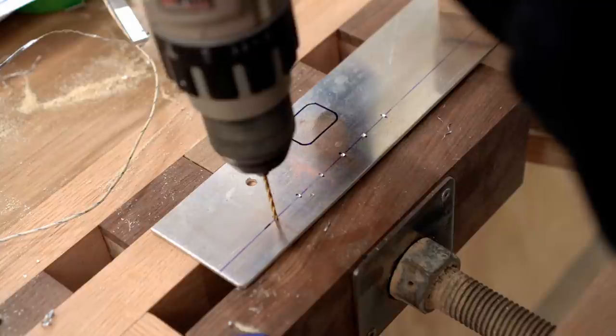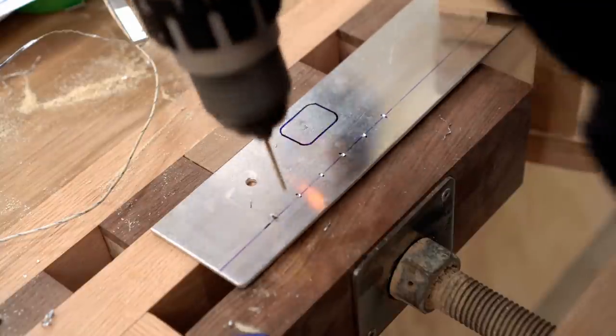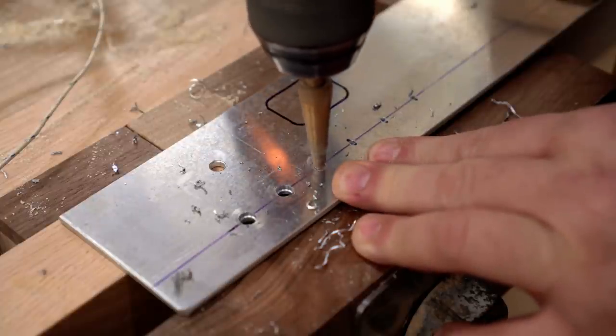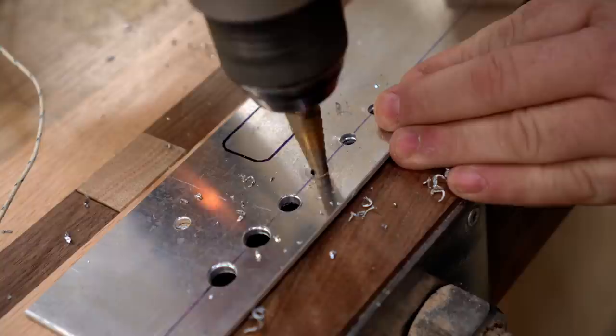Next thing I need to do is work on the back panel. And once again, I'm making this from 1 1⁄8 inch thick aluminum. And here I'm drilling the holes for the input and output connectors.